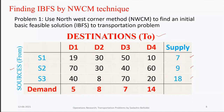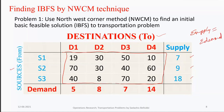Once we have the given matrix — this is the unit cost transportation matrix — the first step is to check whether the summation of supply is equal to the summation of demand. If it is equal, we proceed; otherwise, we need to make it balanced first.